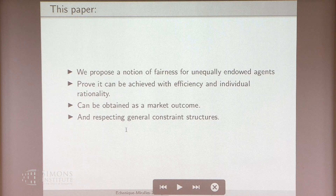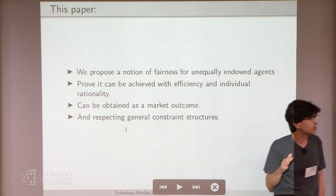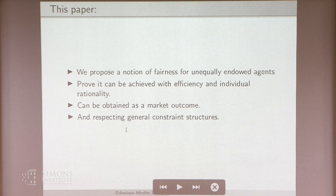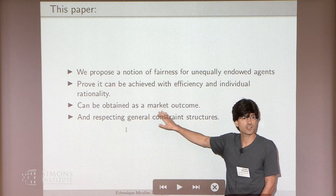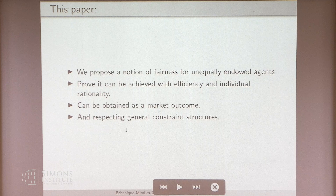Moreover, you can obtain our outcome as a market outcome, and that will explain how it will be related to Hylland-Zeckhauser type of ideas. And moreover, you can achieve this in a framework along the lines of what Fujito was suggesting in his paper, where you have constraints — you may want to impose some constraints on the assignment problem to satisfy some policy objectives, and I'm going to show you that fairly general constraints can be accommodated in this setting.